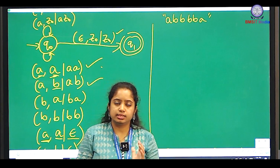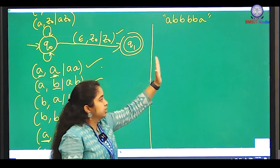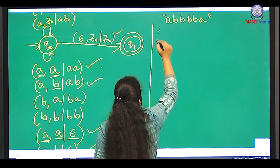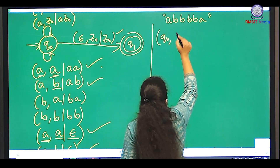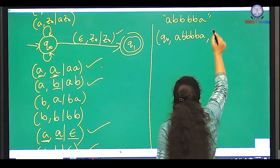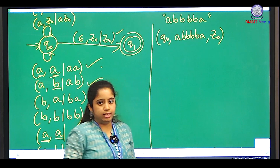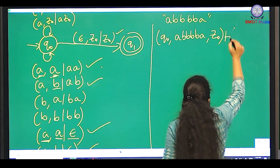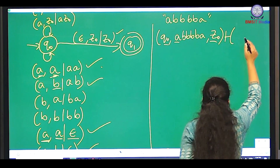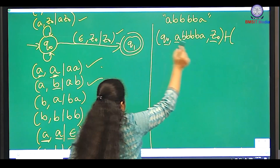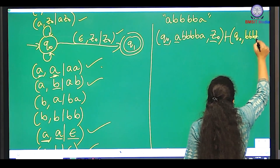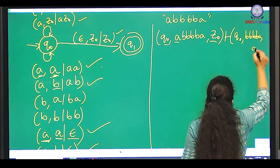Now let's write the instantaneous description for the string 'abbbba'. Start with Q0, the input string is a, b, b, b, b, a and Z0 is the top stack element. Q0 reads a with Z0 on the stack, so as per the transition, push it: next configuration is Q0, remaining string b, b, b, b, a, and stack is a, Z0. Then Q0 reads b with a on the stack — push it onto the stack.